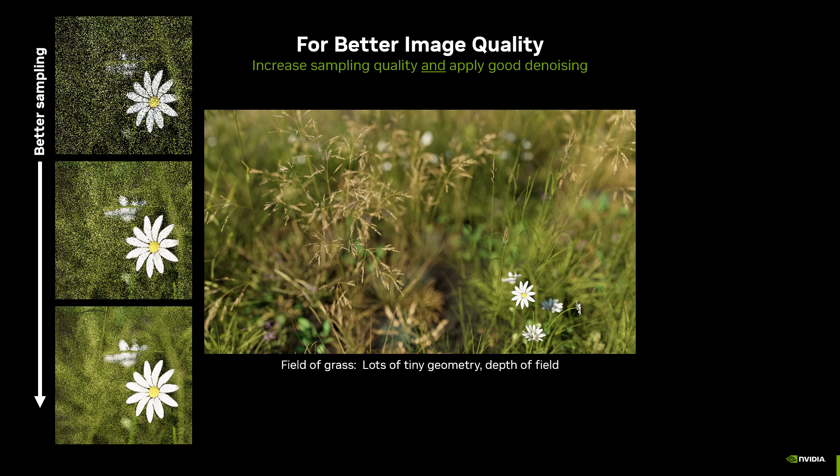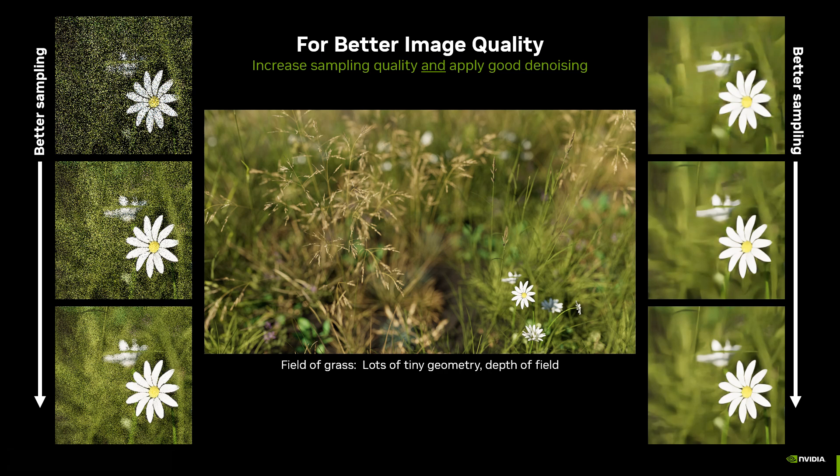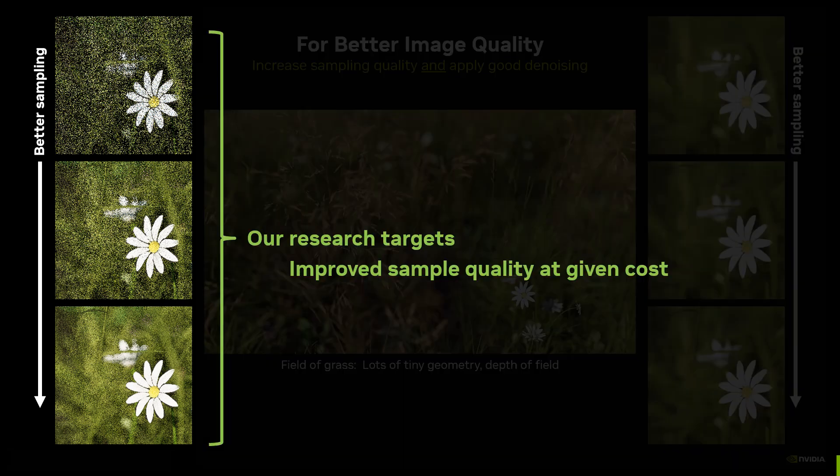You need both better sampling quality and good denoising to improve the image quality. Here's a sequence showing why. On the left we show improving sampling quality, while on the right we've applied a denoiser to those input sequences. Note that even with denoising you need better samples in order to get good quality. In this project we just focus on improving sampling quality at a given cost.